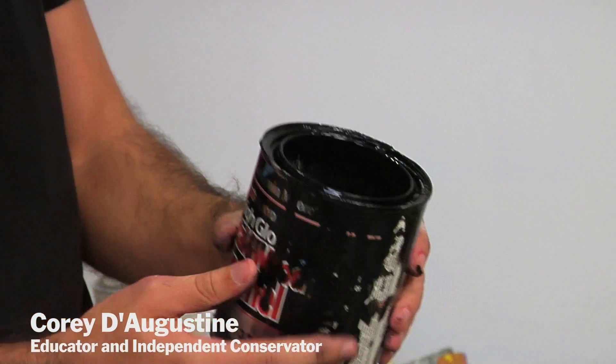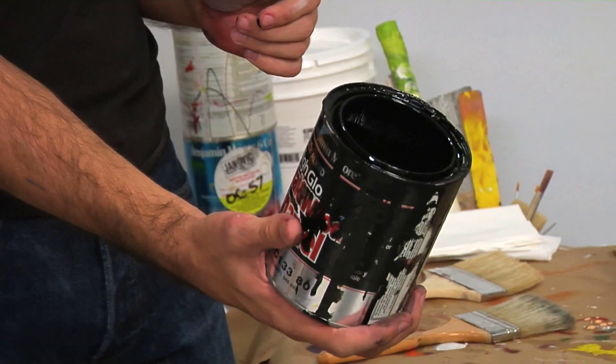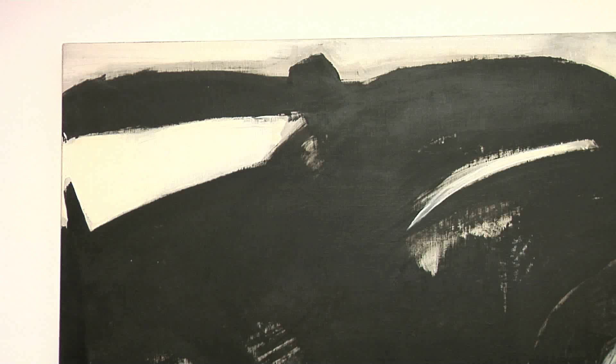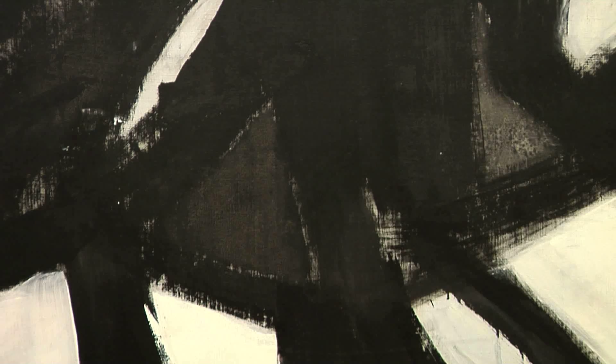Looking at the paint in the can, it looks quite different from artist quality paint. It's very fluid. It dries to a very hard, very flat and high glossy surface. Things that were all very seductive to Kline, in addition to the velocity of paint that could be pulled across the canvas with a brush with this paint, because it is such a low viscosity paint.